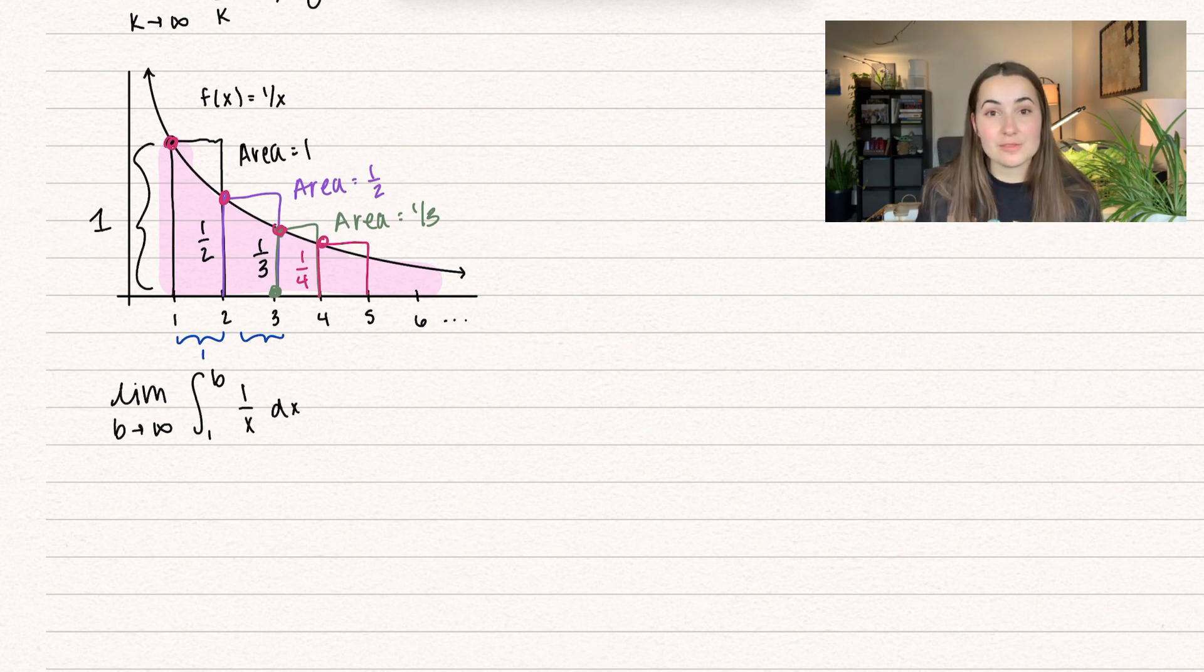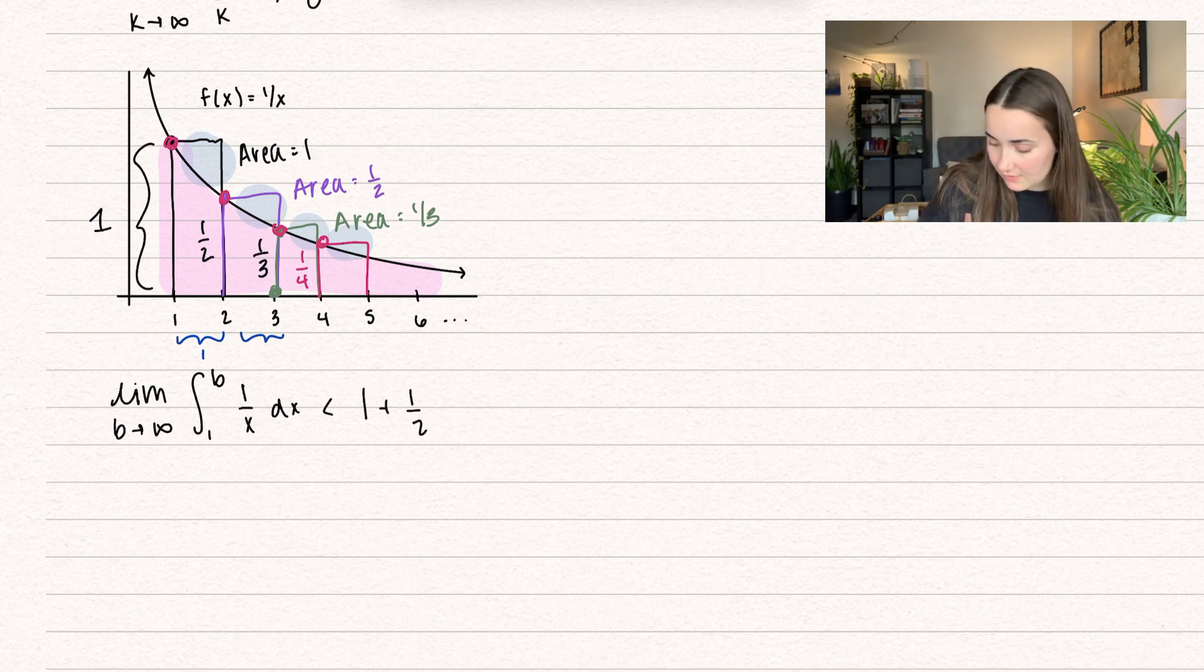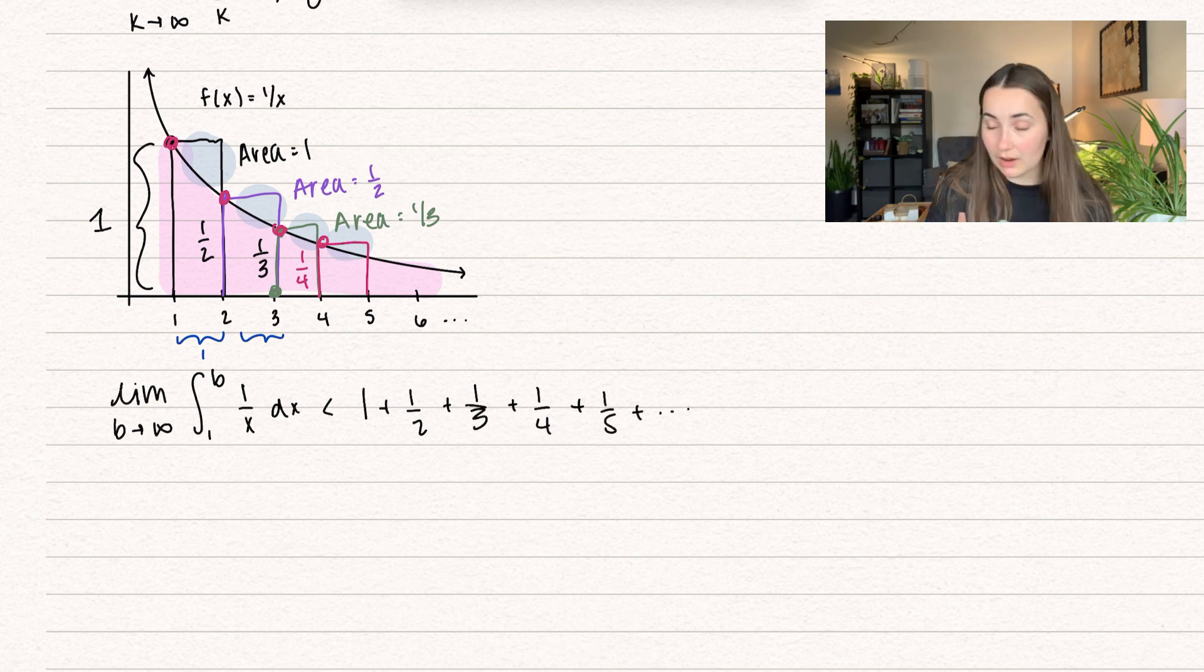So notice that these rectangles are overestimating the area under the curve, because we have all of this extra area up here. So the area under the curve is going to be a little bit smaller than all of these areas. We get 1, plus 1/2, plus 1/3, plus 1/4, plus 1/5, and then that's going to go on forever.